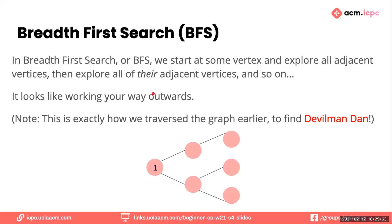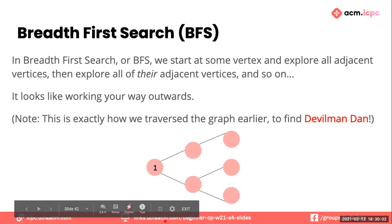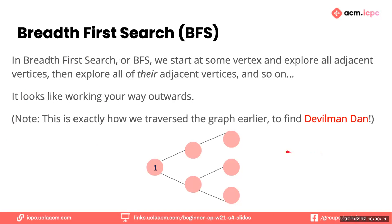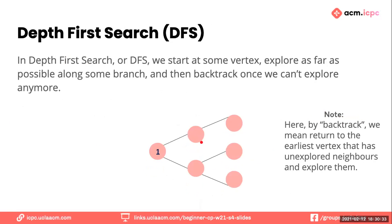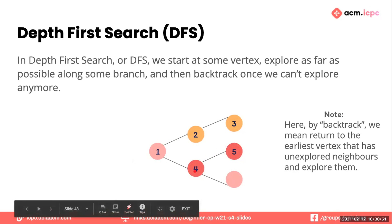In breadth-first search (BFS), we start at some vertex and explore all adjacent vertices, then all their adjacent vertices in turn, and so on — expanding layer by layer, just like we traversed the graph earlier to find Devilman Dan. In depth-first search (DFS), we start at some vertex and explore as far as possible along a single branch, then jump back when we can't explore anymore. For example, we go to four, five, and when we can't explore further, we jump back to the most recent place with unexplored vertices and get to six.